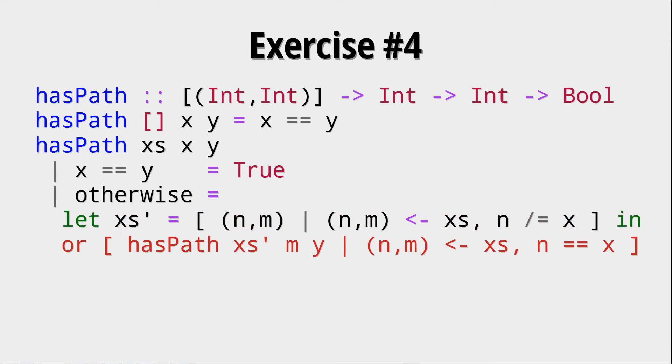Then we create a new list out of all the recursive calls to hasPath on this new list XS prime with a new starting node. The starting node is determined by the same tuples that we just removed, the tuples where n equals x. Those are the edges where we start at x and then end up at a certain other node. We call this node m and we start a new recursive search here. If any of these searches returns true then we found a path. So we or the whole list because this would be a list of booleans.